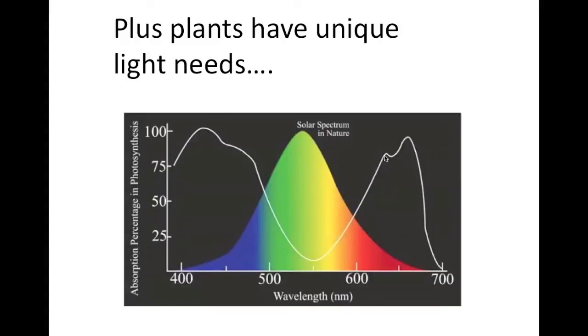This curve here is the PAR light curve, this is what plants see, and you can see that the light we see is green and yellow, very little blue, very little red, and that's what plants need, blue light and red light.